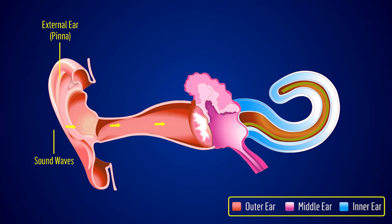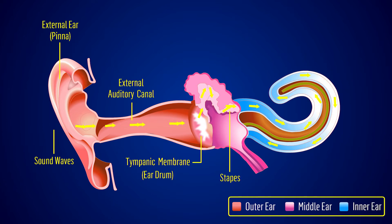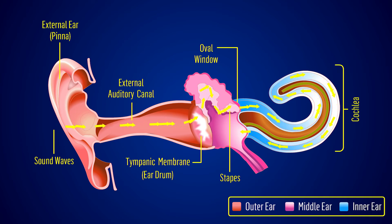The Mechanism of Hearing. Sound waves enter the outer ear and travel through the external auditory canal until they reach the tympanic membrane, causing the membrane and the attached chain of auditory ossicles to vibrate. The motion of the stapes against the oval window sets up waves in the fluids of the cochlea, causing the basilar membrane to vibrate.